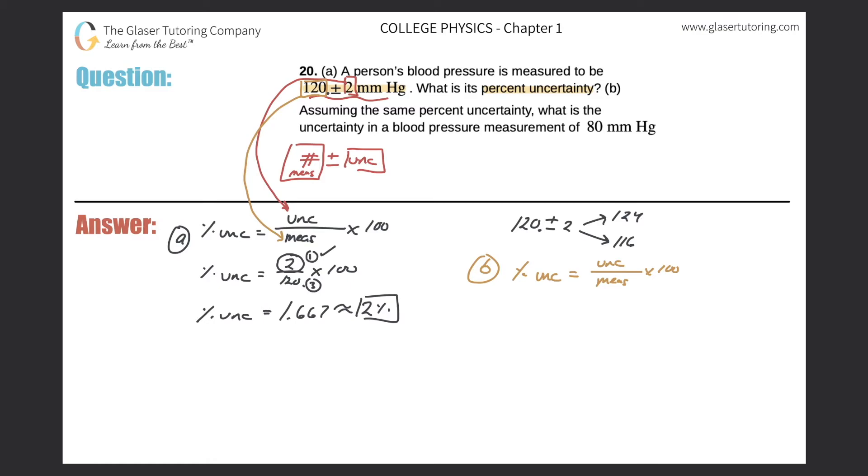So it says to assume the same percent uncertainty. So my 2% value calculated in part A will be plugged into the percent uncertainty for part B. So I have 2%. Now it wants us to find, what is the uncertainty? So we're looking for the numerator value. So I'll just label that as my x. And the measured value was 80 millimeters of mercury. So the 80 goes on the bottom. Again, I have to assume that this measured number does have two significant figures. So I'm going to place in the decimal there. So multiply this by 100.